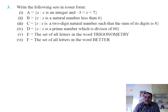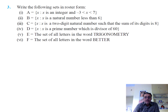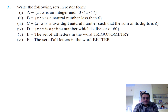The second bit is {x : x is a natural number less than 6}, giving 1, 2, 3, 4, 5. The third bit is {x : x is a two-digit natural number such that the sum of its digits is 8}: 17, 26, 35, 44, 53, 62, 71.